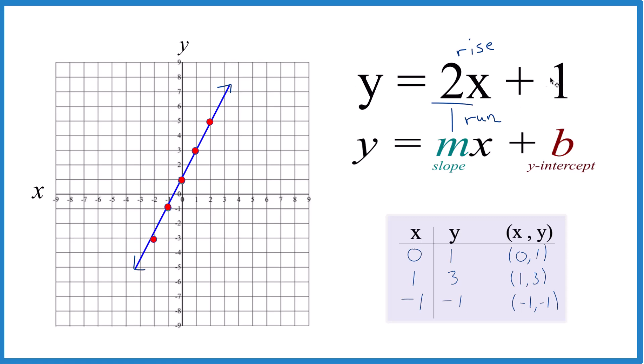So we have our y-intercept is 1, and our slope is 2, but we're calling it 2 over 1 so we can use rise over run. And that is it. That's how you graph the linear equation y equals 2x plus 1.